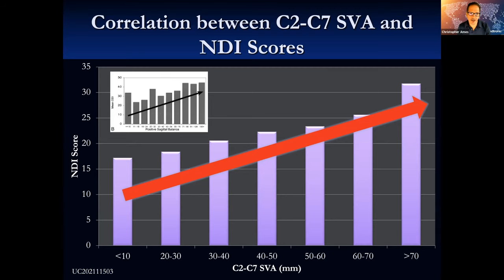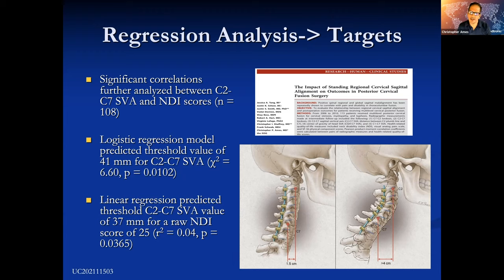We published a study several years ago in Neurosurgery showing a significant correlation of the cervical sagittal plane to disability scores. When we started out in this problem, we didn't realize what was really driving disability in these patients. We developed a correlation to the C2 plumb line that gave us at least some sort of guidepost. We then did a regression analysis — just like they did for the Schwab SRS classification — and found a threshold of about four centimeters. We use that as our realignment target to try to get these patients to less than four centimeters.